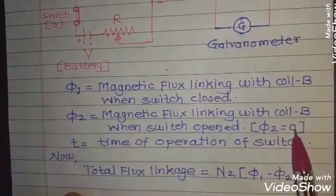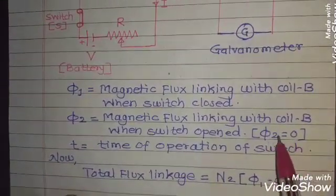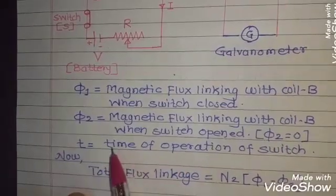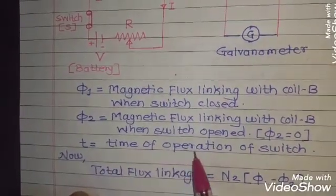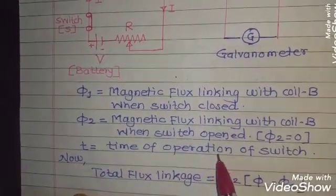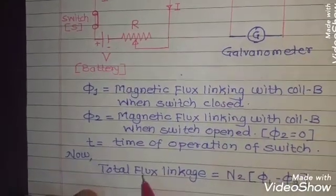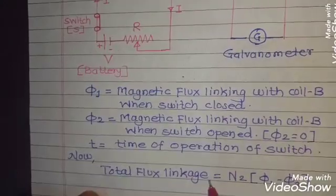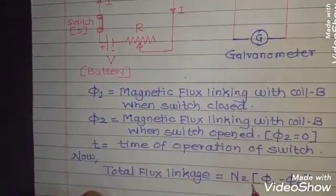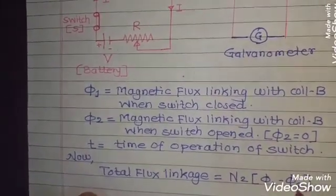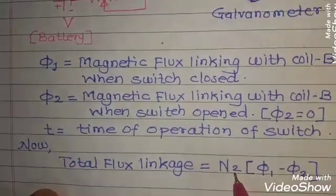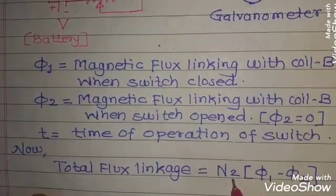When the switch is open, the flux linking with coil B will be equal to 0. If it happens in time of operation of the switch, let that time be T. Now, in this case, what will be the total flux linkage? The total flux linkage will be equal to N2 in bracket phi1 minus phi2. N2 is the number of turns of the coil B.